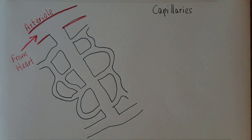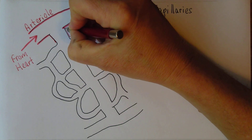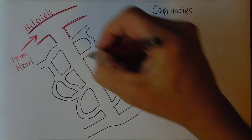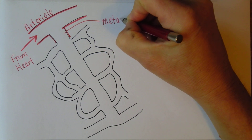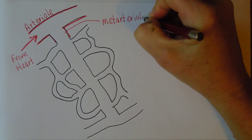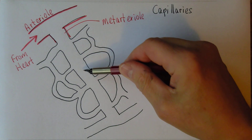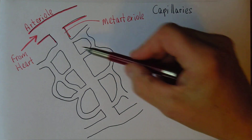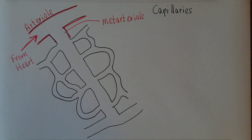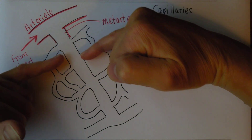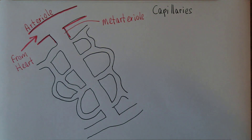This larger arteriole gives rise to smaller arterioles. This smaller vessel here is a metarteriole. We see the metarteriole going down, and these are the capillary loops that are branching off from it. Ultimately, when the blood has gone through the capillaries and down through the metarteriole, it's going to be collected into the venous system.